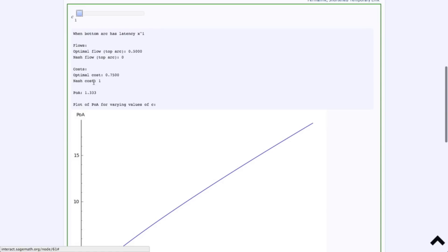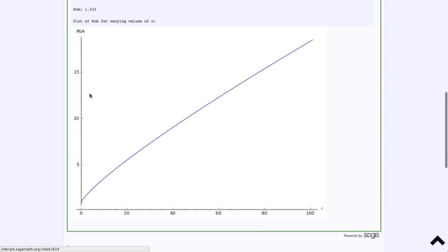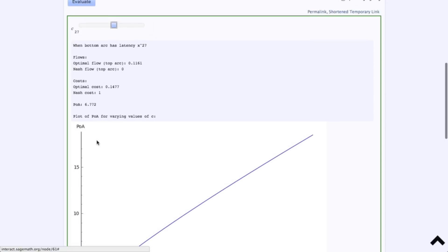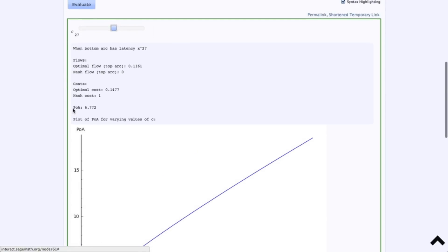And then the price of anarchy, which is just the ratio of these two costs, is 1.33, or four-thirds. And what I've actually got there is a plot of this price of anarchy. So, how bad a situation is as the bottom route gets slower and slower. And we can just see this price of anarchy going up. So, 1.33. And there it's 6.772. And quantifying this price of anarchy is actually a very nice research problem. Lots of people doing some work on that. And that's about it for routing games in general and the Pigou's example in particular.